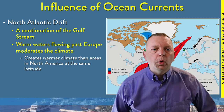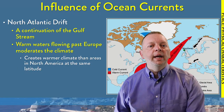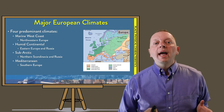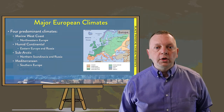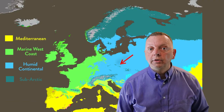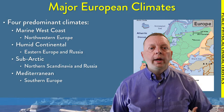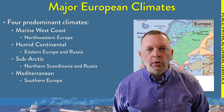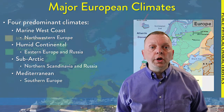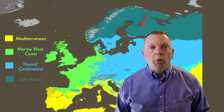Because of the warm ocean currents of the North Atlantic Drift, it actually creates a marine west coast climate in the British Isles and the northwest portions of Europe. As we move further east, away from the North Atlantic Drift into eastern Europe and Russia, we get into areas that have a humid continental climate.